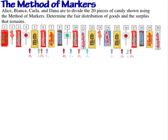In this video we're going to use the method of markers to find a fair distribution of goods. We have four players: Alice, Bianca, Carla, and Dana. They're going to divide 20 pieces of candy using the method of markers. The candy is laid out in an array — that's the first condition. You have to line up all the items, and then each player places markers down.